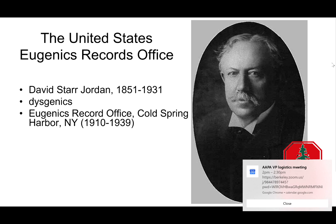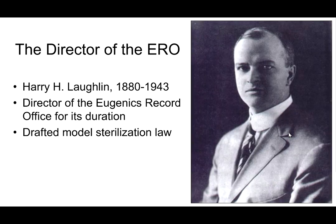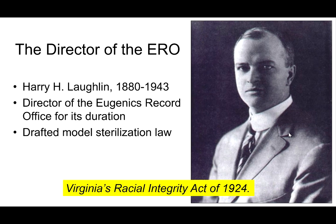The Eugenics Record Office was established in Cold Spring Harbor, New York. Its first and apparently only director was Harry Laughlin. In this position, he had considerable political influence. He drafted the Model Sterilization Law that was implemented in a number of different states, and that formed the basis of Virginia's Racial Integrity Act of 1924 — which you'll hear more about in the next experience. He also had a significant influence on immigration policy.